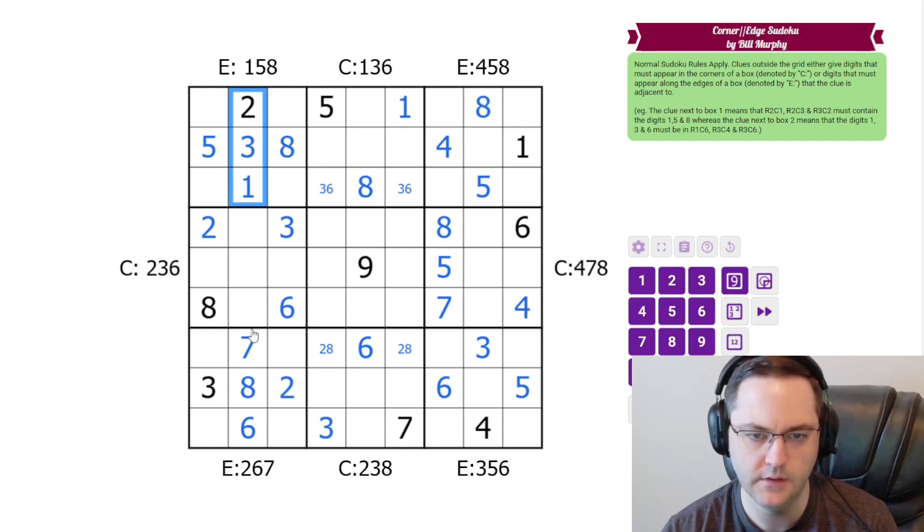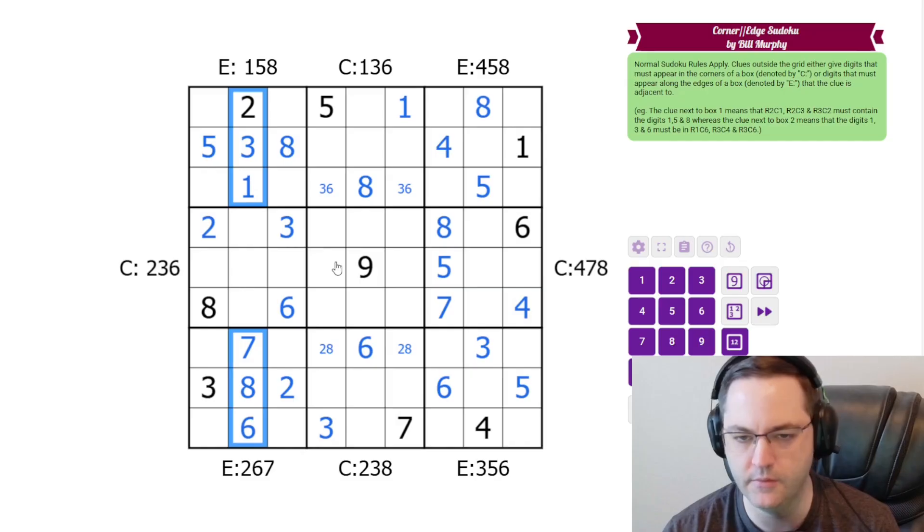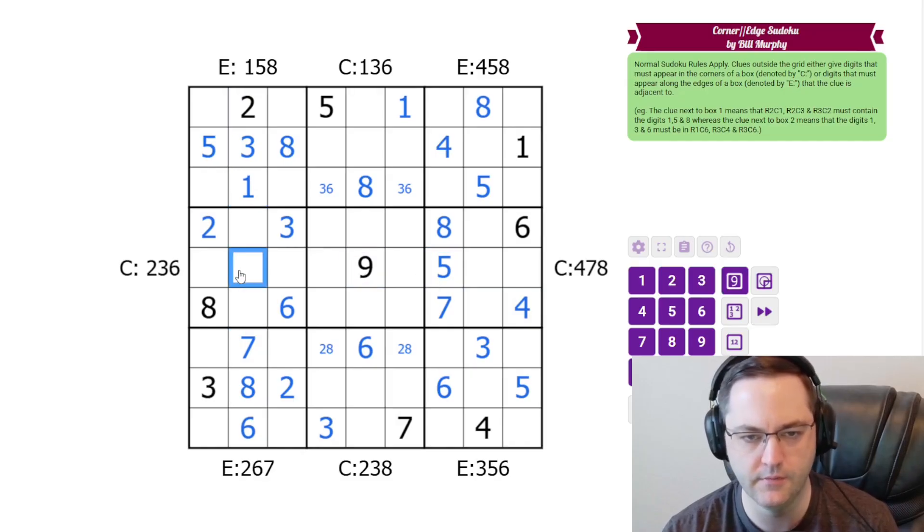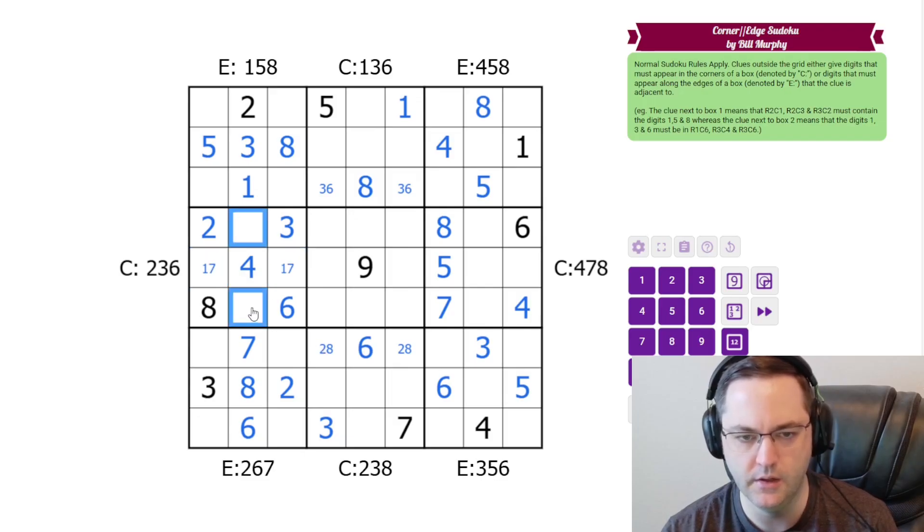I'm not seeing it. I did just notice though, we're missing 4, 5, 9 from this column. And we have a 9 and 5 in the row. So that's 4. 5, 9 here, which means this is 1 and 7. Don't think we can do either of those yet.